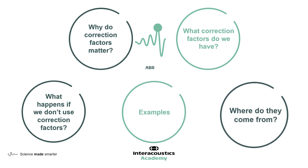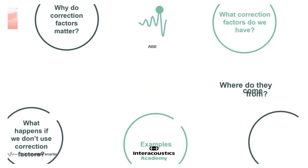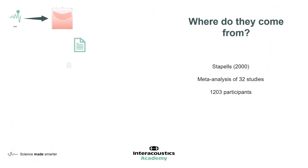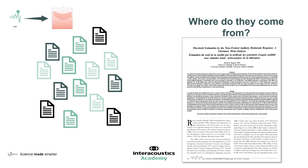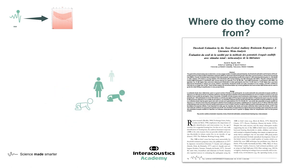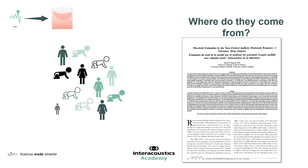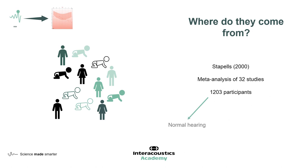Where do these ABR correction factors come from? Firstly, let's consider the ABR offset. There have been many studies over the years investigating the relationship between ABR results and pure tone audiogram or behavioural thresholds. Fortunately, Stapels in 2000 published a meta-analysis, which included 32 studies and over 1,200 participants. Some of these participants were adults and some were children. Some had normal hearing and some had a hearing loss — so we have a really comprehensive meta-analysis here.